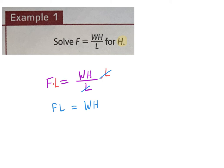If I want to get rid of that W, what do I need to do? Divide. So I'm going to divide by W. On the left-hand side, the Ws cancel out to one. H equals F times L divided by W. That is my answer.